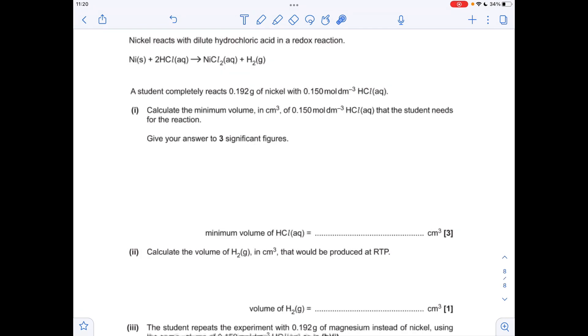So we're moving on to the final question now. We've got to work out the minimum volume in cm cubed of this concentration HCl needed for this reaction. So the first thing we'll do is work out how many moles of nickel we've got. Mass over MR.